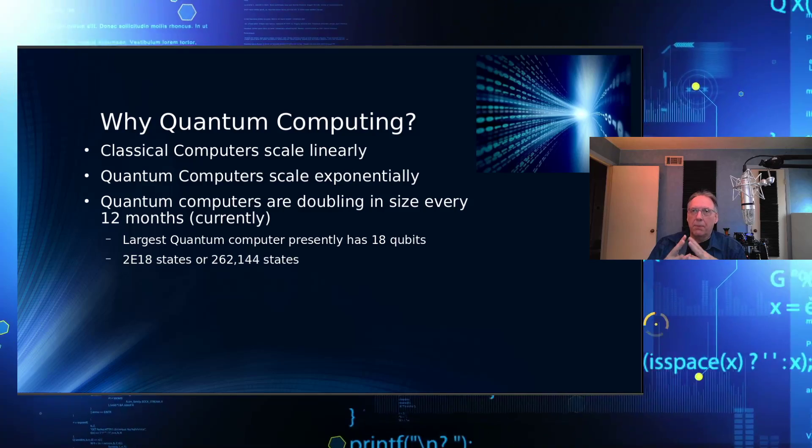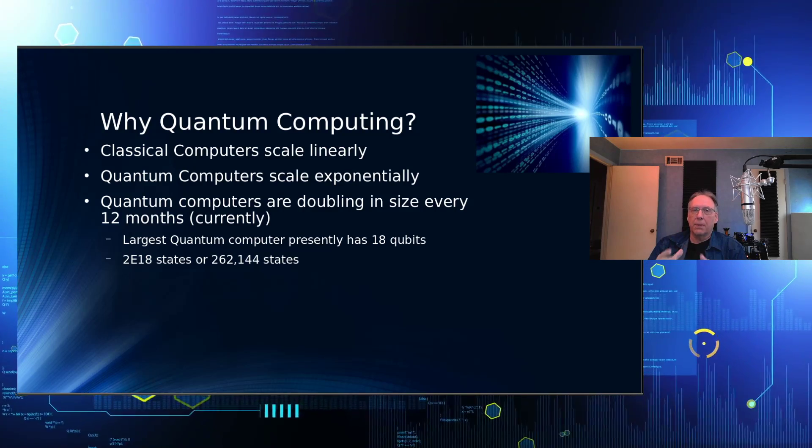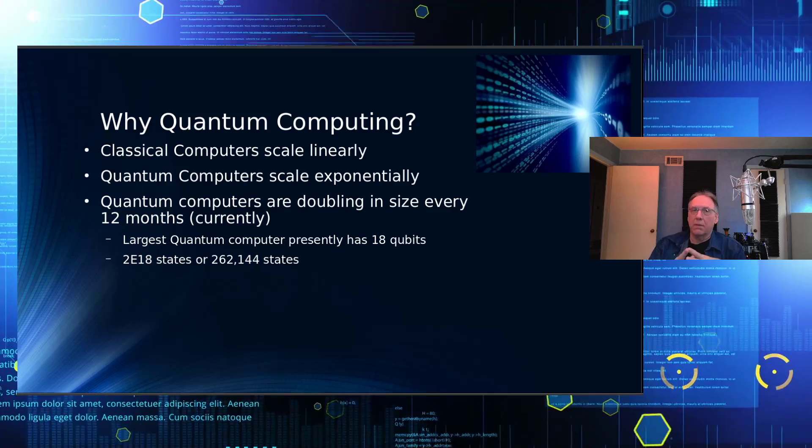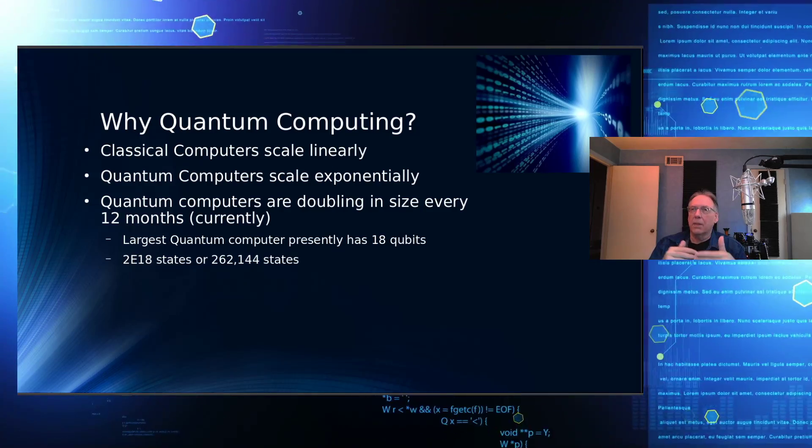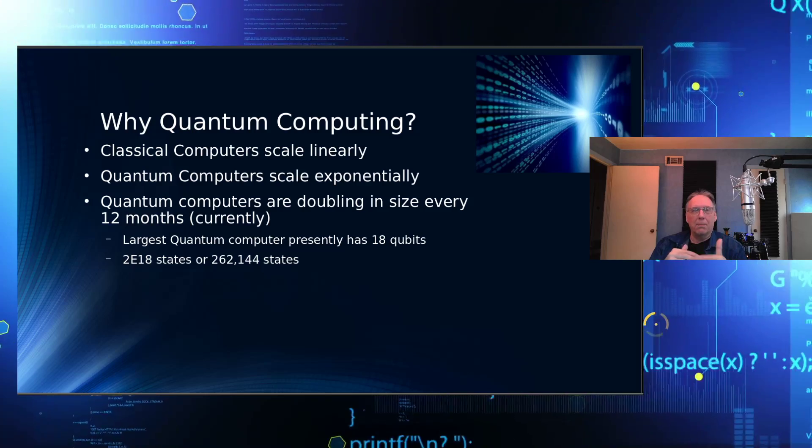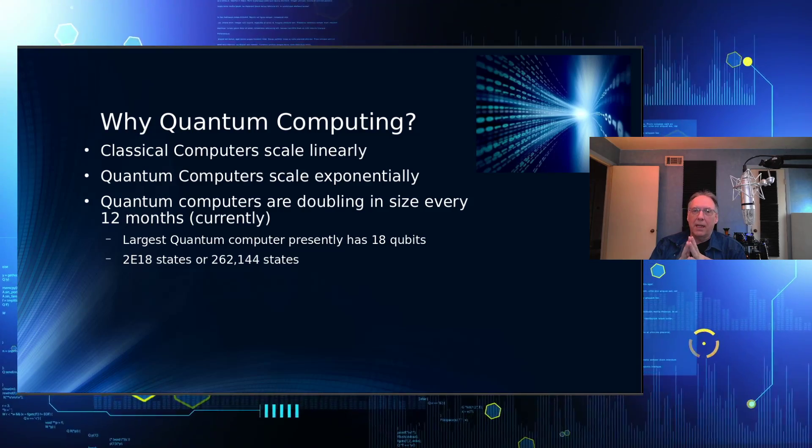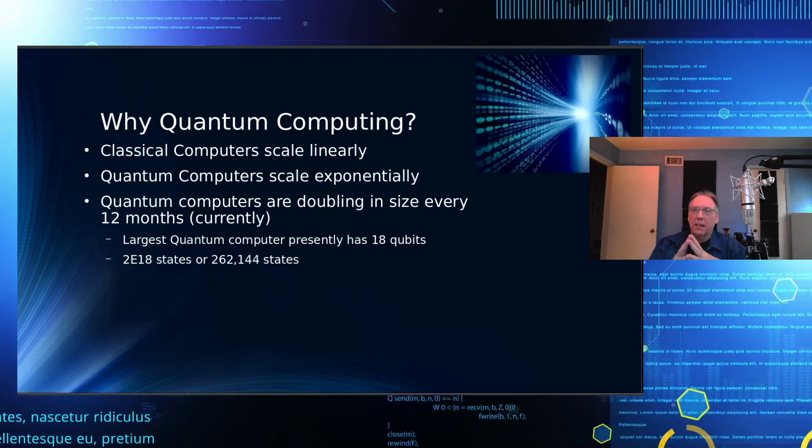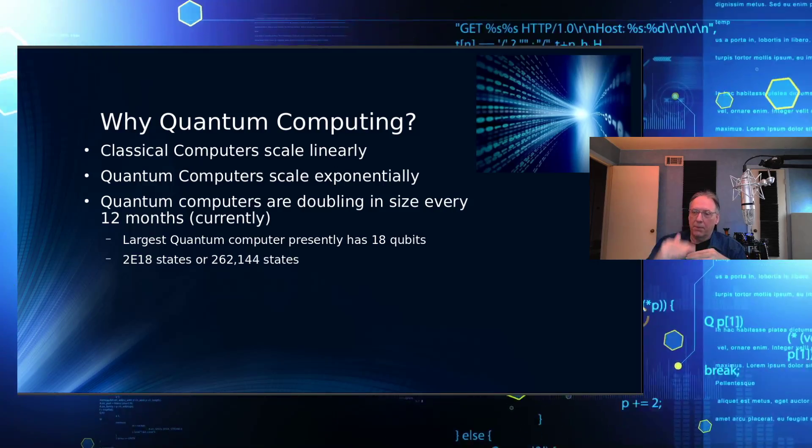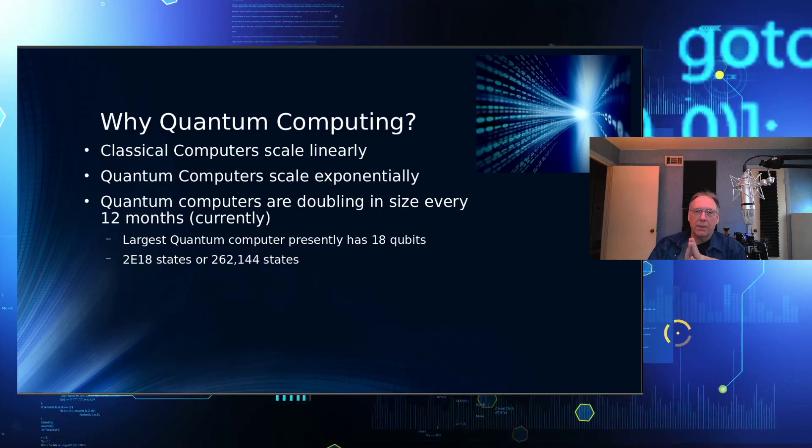The other problem with quantum computing today is it requires super cold temperatures because it uses Josephson's junction boxes in order to do that. So it has to be cooled almost, not quite, but almost absolute zero to do that. And that uses expensive liquid helium to get the temperatures down, as well as a number of stages of cooling to get it down to the chip.